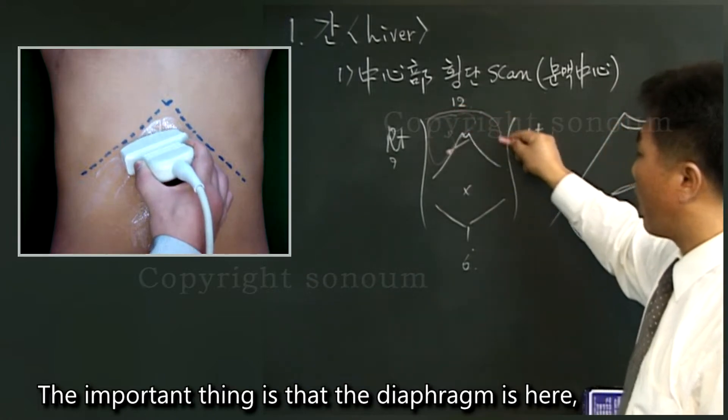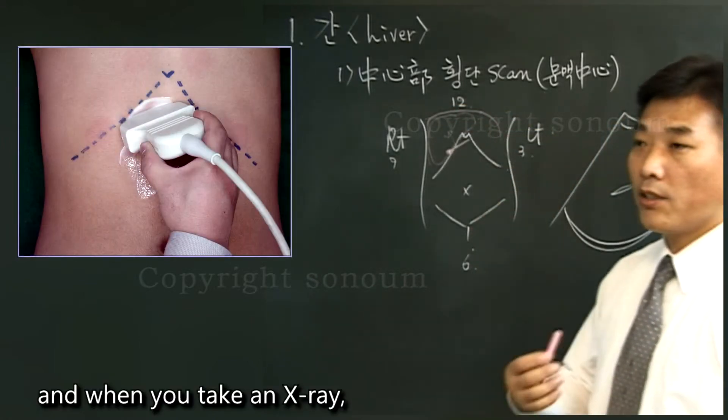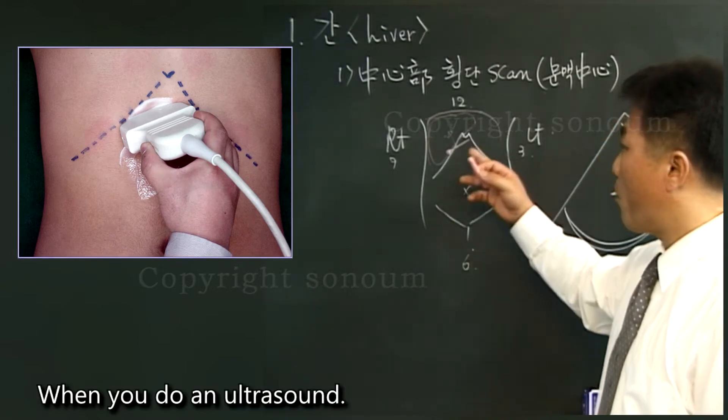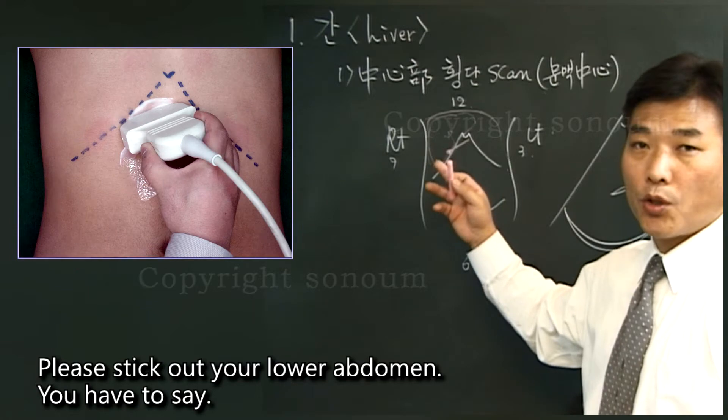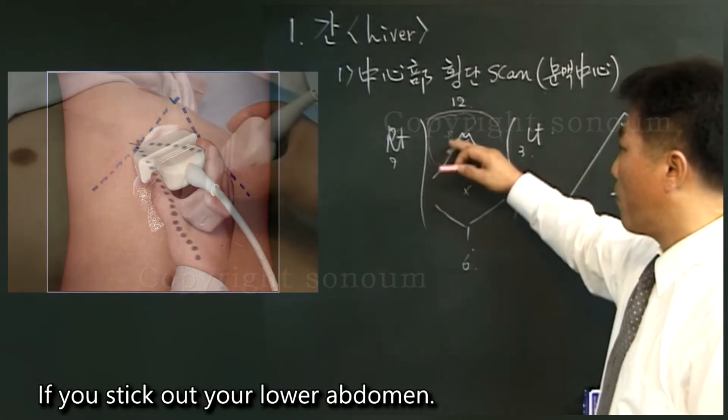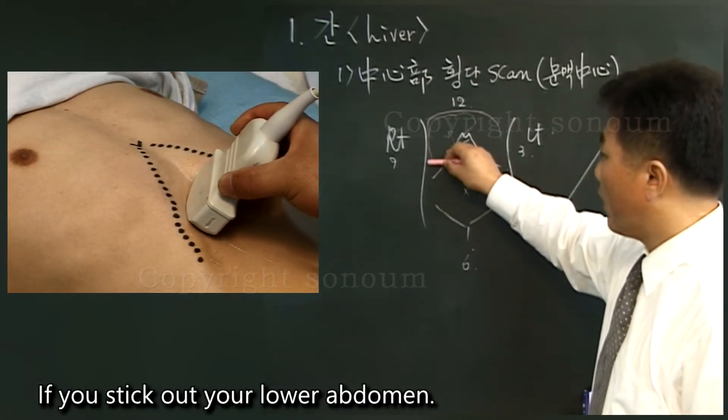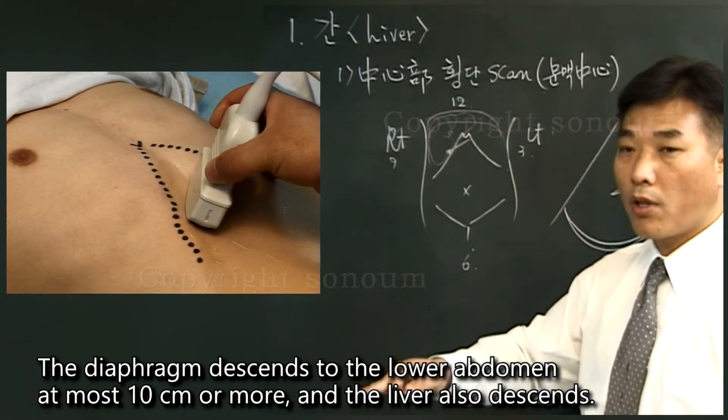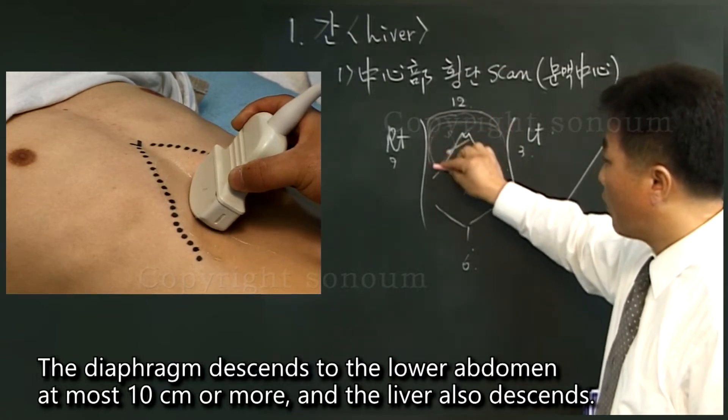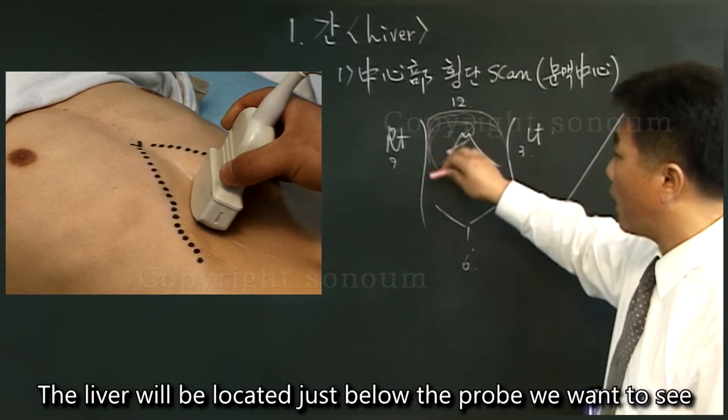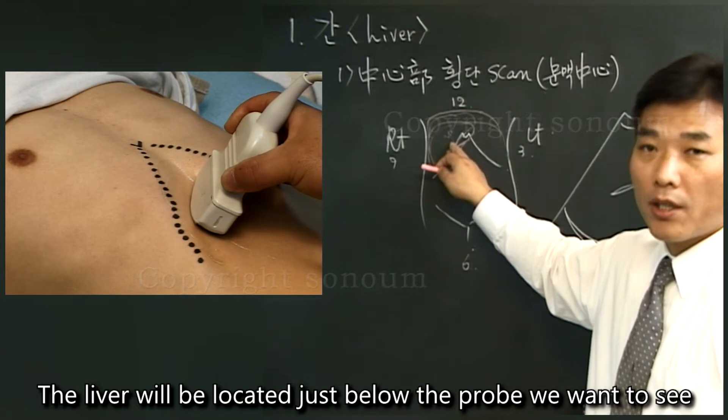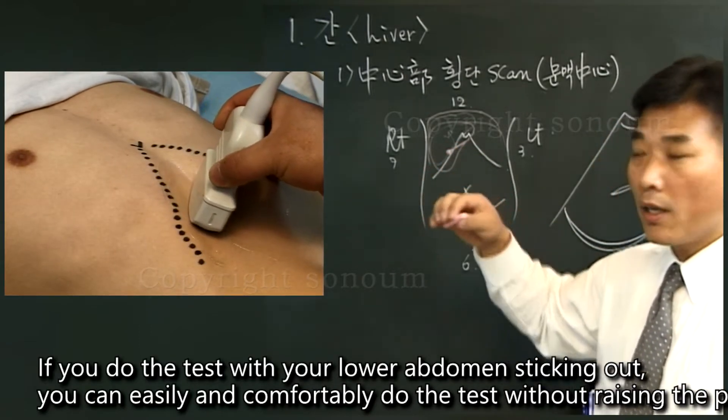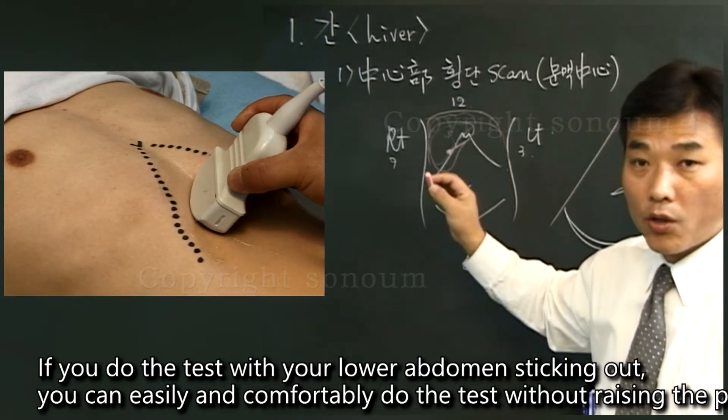The important thing is that the diaphragm is here, and when you take an x-ray, you ask them to breathe in. When you do an ultrasound, please stick out your lower abdomen. If you stick out your lower abdomen, the diaphragm descends to the lower abdomen, at most 10 cm or more. And the liver also descends. The liver will be located just below the probe. If you do the test with your lower abdomen sticking out, you can easily and comfortably do the test.